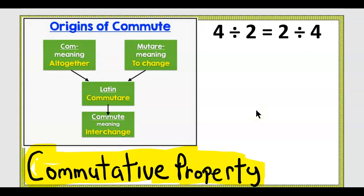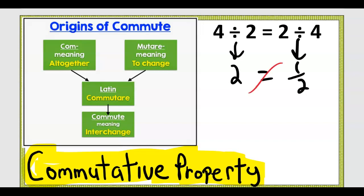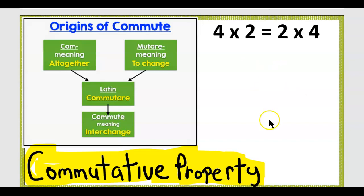Can we commute with division? Four divided by two is two, and two divided by four is a half — that does not equal. What about multiplication? Four times two is eight. Two times four is eight. Commutative property works with multiplication.